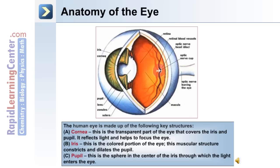The anatomy of the eye is depicted in this image and is made up of the following key structures. The cornea is the transparent part of the eye that covers the iris and pupil; it refracts light and helps to focus the eye. The iris is the colored portion of the eye, and this muscular structure constricts and dilates the pupil. The pupil is the opening in the center of the iris through which light enters the eye. Within the eye is the retina, macula, and the optic nerve or disc. At the posterior portion of the eye is the optic nerve, which transmits visual information.